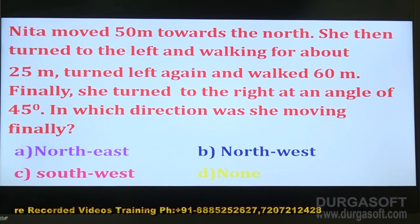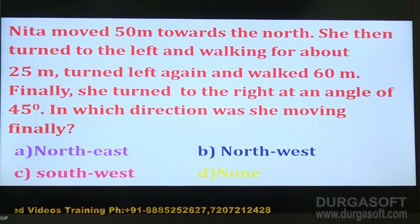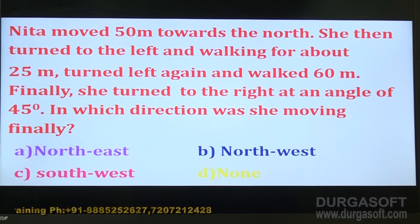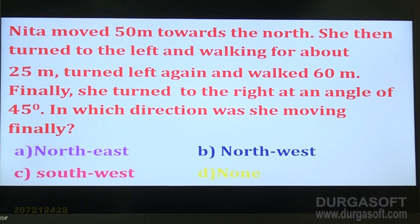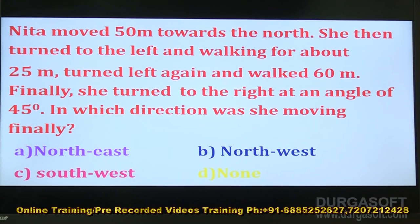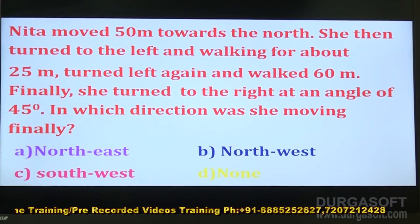Read the question. Neeta turned to the left and walked for about 25 meters, turned left again and walked 60 meters. Finally, she turned to the right at an angle of 45 degrees. In which direction was she moving finally? This is a question related to angular directions, the third type of question related to directions and distance.